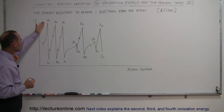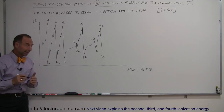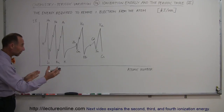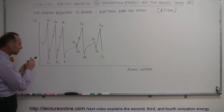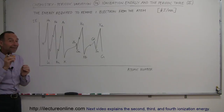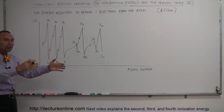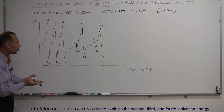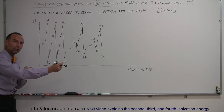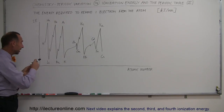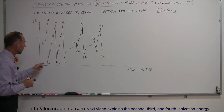Then we jump down to very low ionization energy for lithium, because now we're on the left side of the periodic table. Lithium has three electrons, and that third electron is in the second energy level being shielded by the inner two electrons, therefore it is much farther away from the nucleus and much easier to remove.